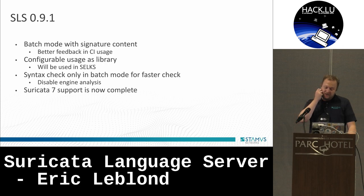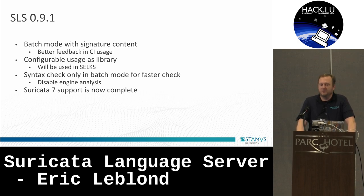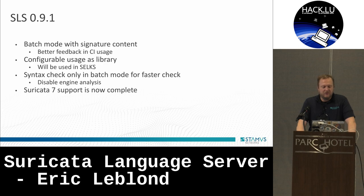I released yesterday version 0.9.1, where the main improvement is the batch mode — you can now run it on the command line as a separate tool. So if you want to integrate it into CI, you can easily do that. If you are writing signatures, you can now use the Suricata Language Server. It's a simple Python module, and you can also use it programmatically as a library to do syntax checking of signatures.